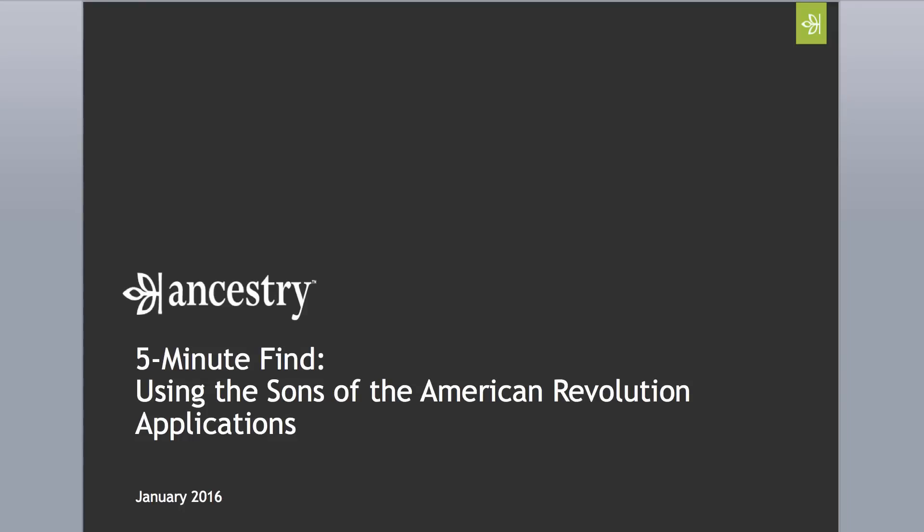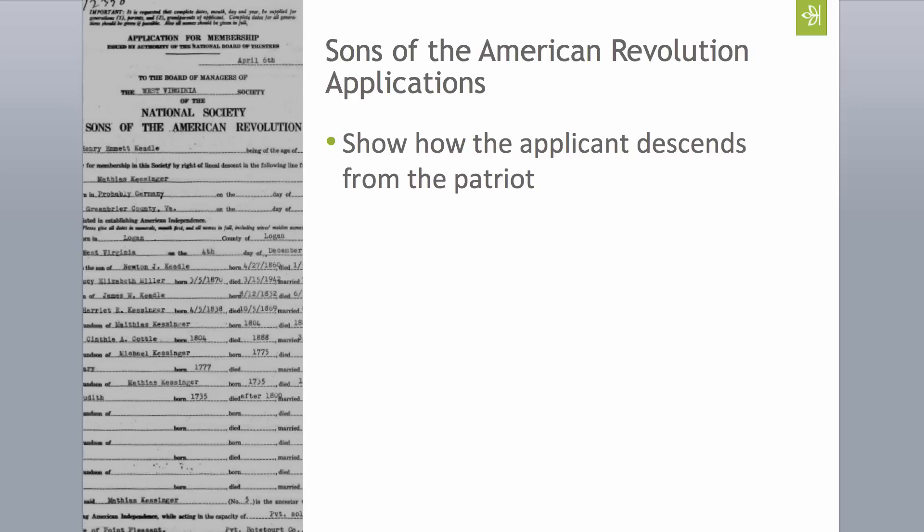Welcome to 5-Minute Find, where we show you things to do on Ancestry.com in 5 minutes or less. In this episode, we're using the Sons of the American Revolution applications. The Sons of the American Revolution is a lineage society for men who descend from a patriot of the American Revolution.